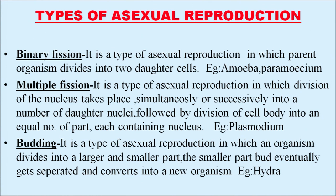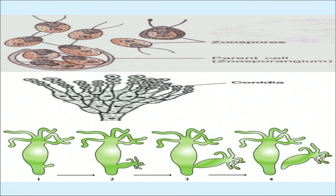An example of multiple fission is Plasmodium. Simplified: in multiple fission, a single organism divides into many organisms. Next is budding — it is a type of asexual reproduction in which an organism divides into two unequal parts, a larger and a smaller part. The smaller bud eventually gets separated and converts into a new organism. The example of budding is Hydra, as seen in the picture.